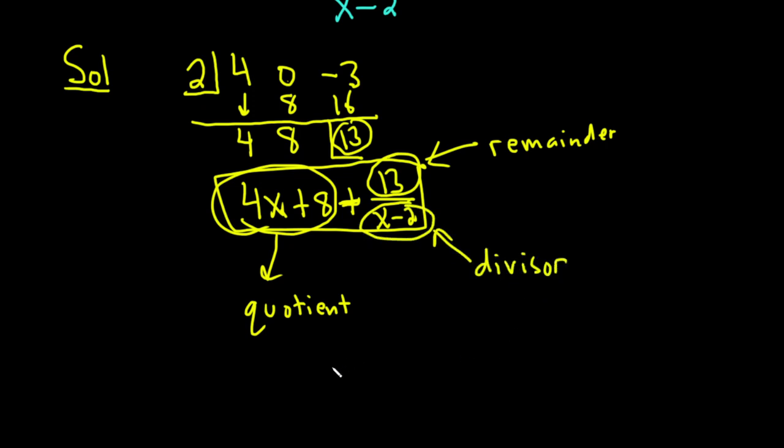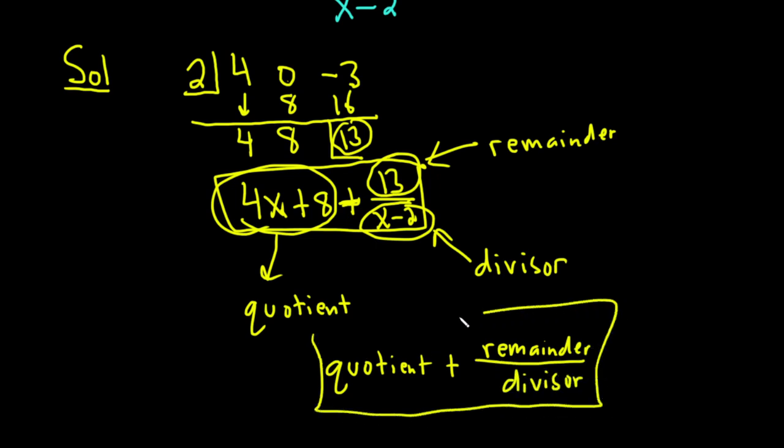So the answer is always quotient plus remainder over divisor. That's always going to be the form for your answer in these problems.